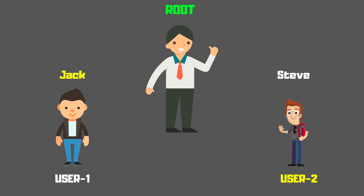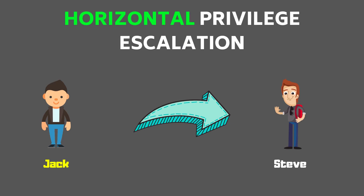The first type is horizontal privilege escalation. Here, once user one is able to access another user's data, that is called horizontal privilege escalation. Jack and Steve have the same permissions, so if Jack uses some tricks to access the system and gains access to Steve's files or is able to modify Steve's data, then that is called horizontal privilege escalation.